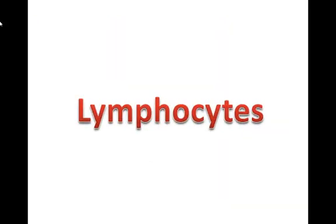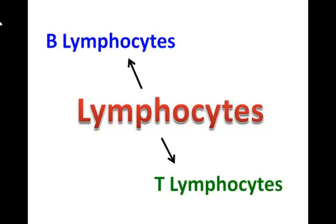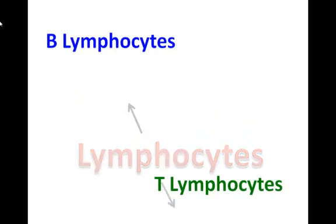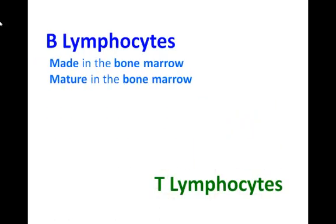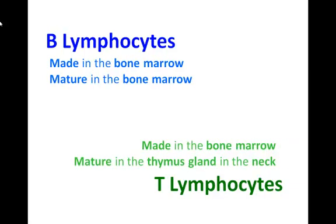So what about lymphocytes? Lymphocytes are another kind of white blood cell that come in two types: B lymphocytes and T lymphocytes. B lymphocytes are made in the bone marrow and mature in the bone marrow, whilst T lymphocytes are made in the bone marrow but mature in the thymus gland in the neck.